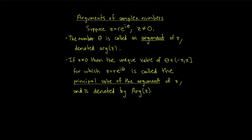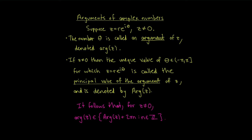We're about to define functions where we need to pick a particular value of the argument, so it's useful to introduce the principal value of the argument. The principal value of the argument of a non-zero complex number is defined to be the unique angle in the interval (−π, π] for which z = r·e^(iθ). The notation is Arg(z) with a capital A. Any argument of z is always an element of the set {Arg(z) + 2πn : n ∈ ℤ}.